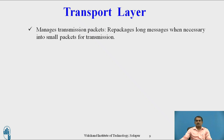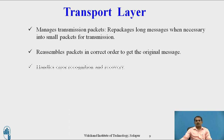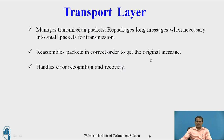The transport layer manages the transmission of packets, breaking long messages into small packets for transmission and reassembling them in the correct order to recover the original message. It handles error recognition and recovery using protocols TCP and UDP — TCP is connection-oriented, UDP is connectionless. Before transmitting, a sequence number is assigned to each packet; the receiver checks sequence numbers and if any is missing, the missing packet is resent. The transport layer gets acknowledgement for packet delivery and resends missing packets.